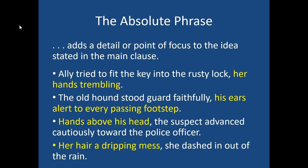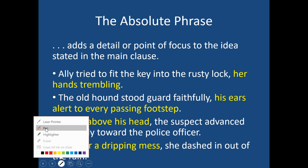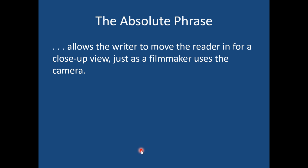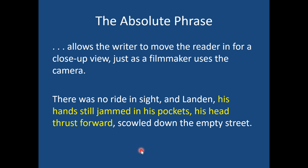These examples also illustrate the different structures an absolute phrase can take. 'Hands' followed by a participle 'trembling'; 'ears' followed by an adjective 'alert' and then a prep phrase 'to every passing footstep'; 'hands' followed by a prep phrase 'above his head'; and a noun renamed by another noun phrase — 'her hair, a dripping mess.' All are absolute phrases. Like a filmmaker, you can zoom in or close up on an image. You can use them anywhere in a sentence: 'There was no ride in sight, and Landon, his hands still jammed in his pockets, his head thrust forward, scowled down the empty street' — forcing the reader to focus on two small details.